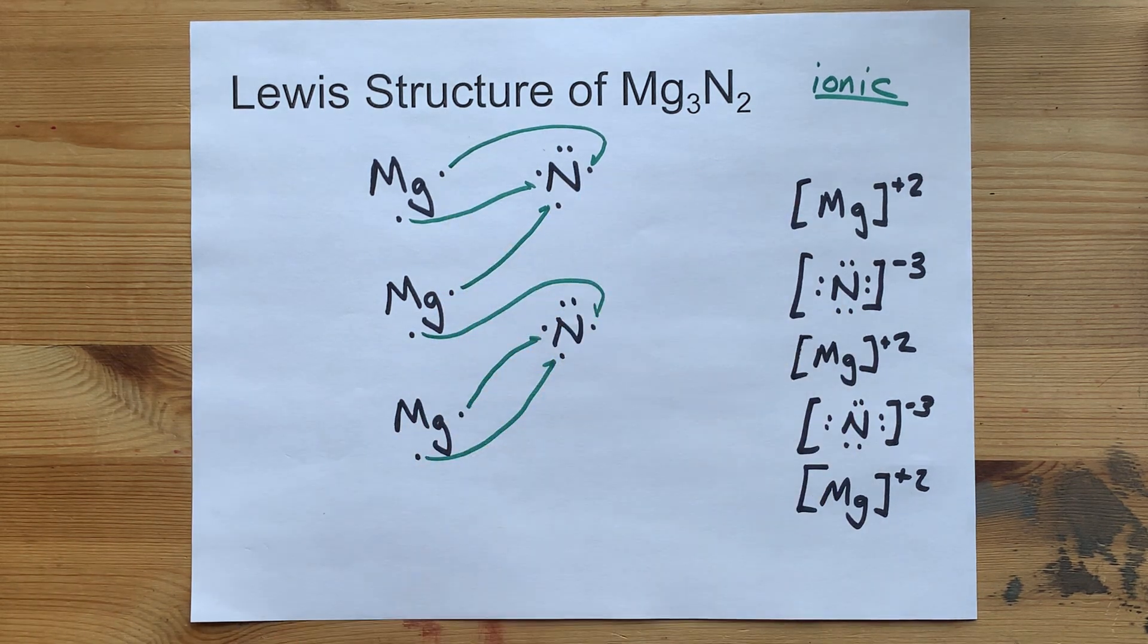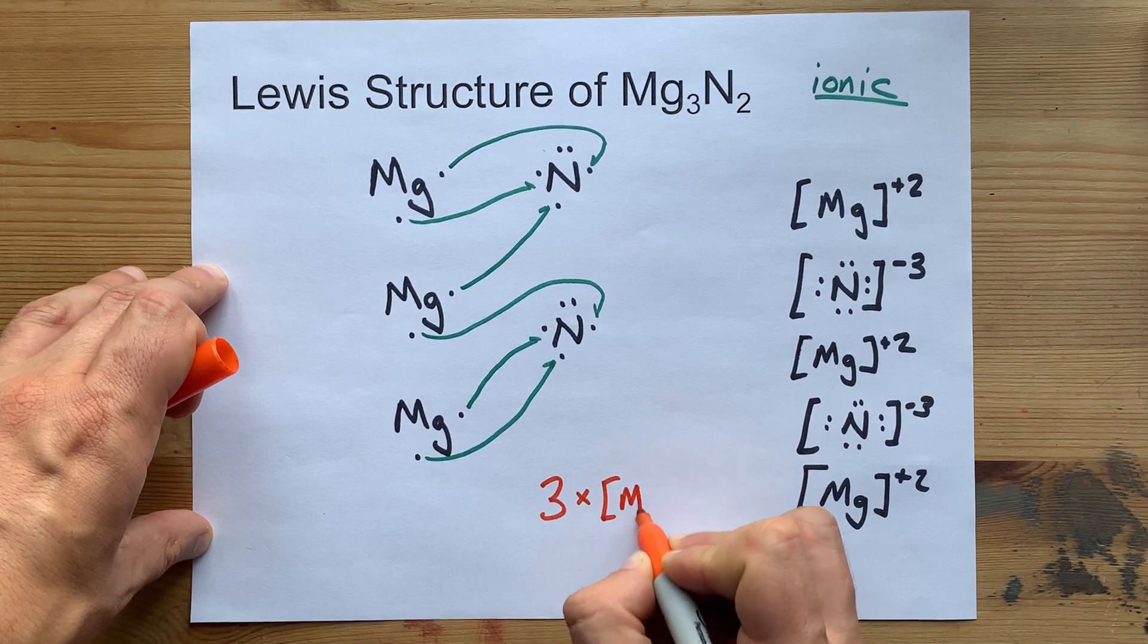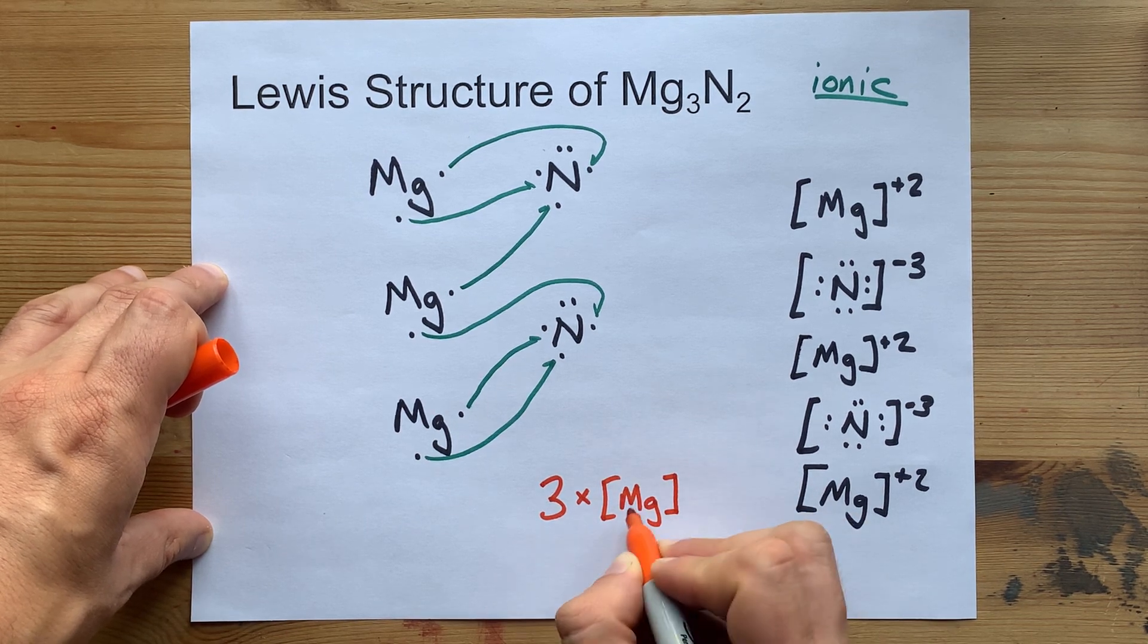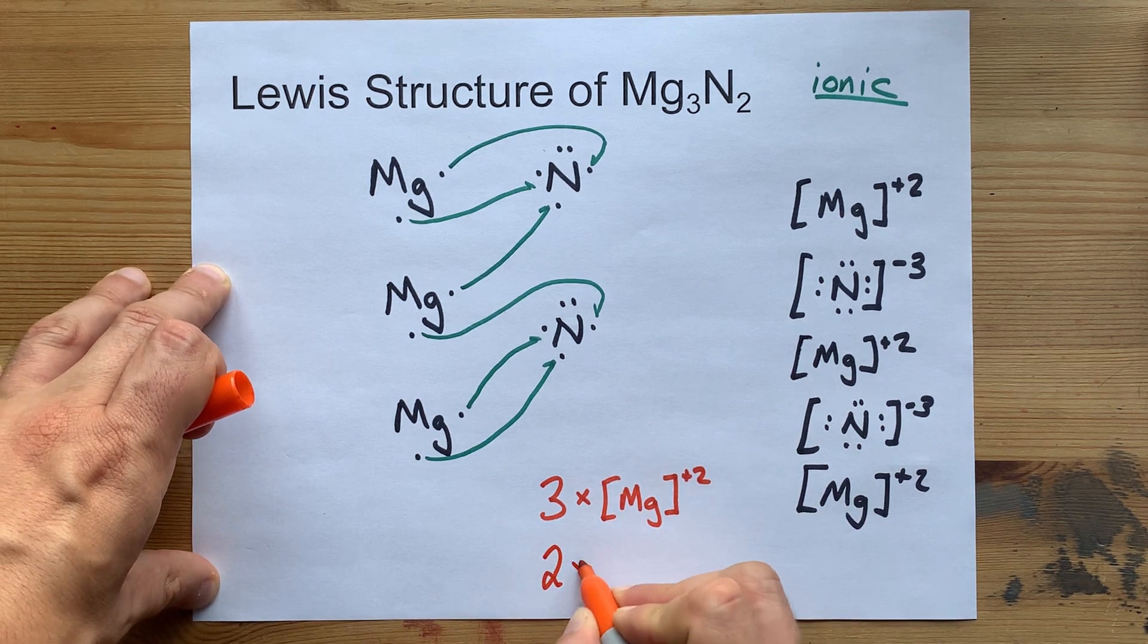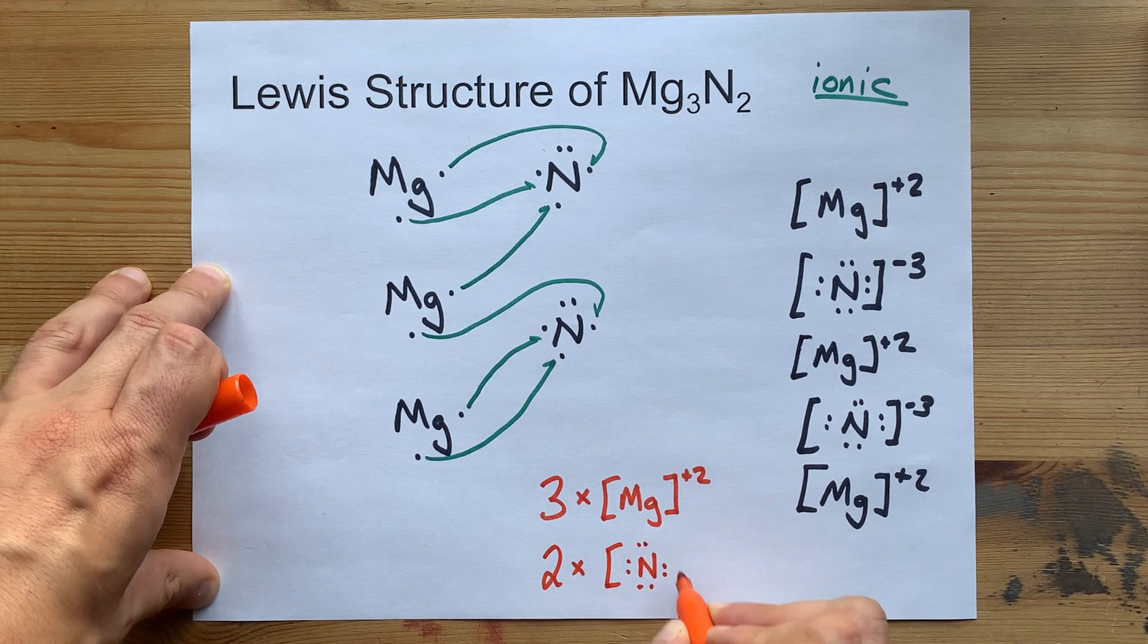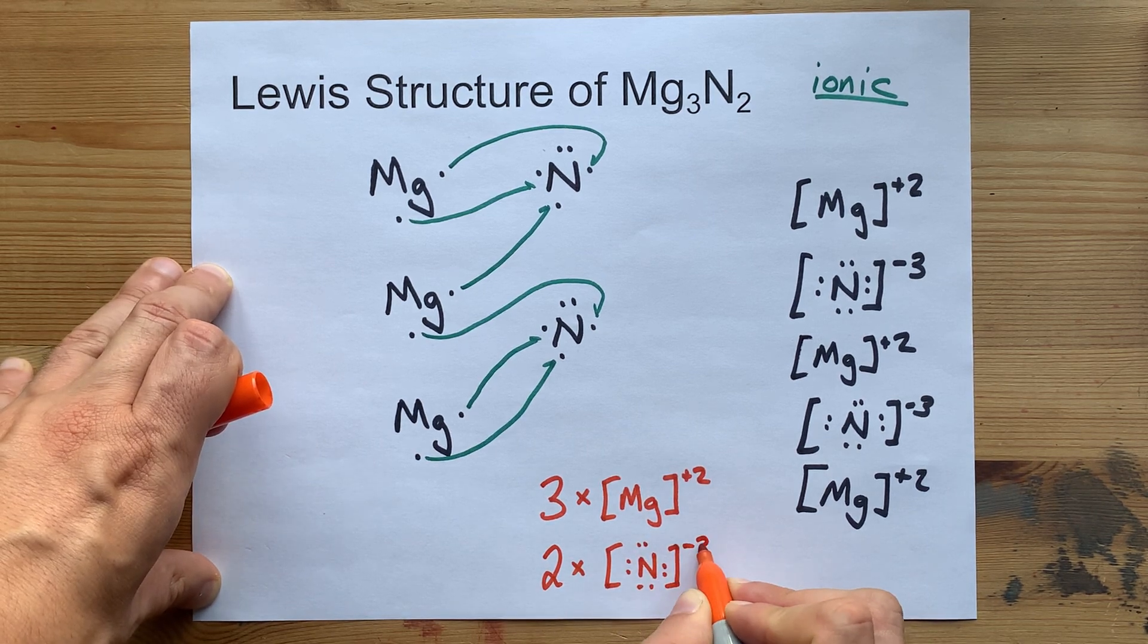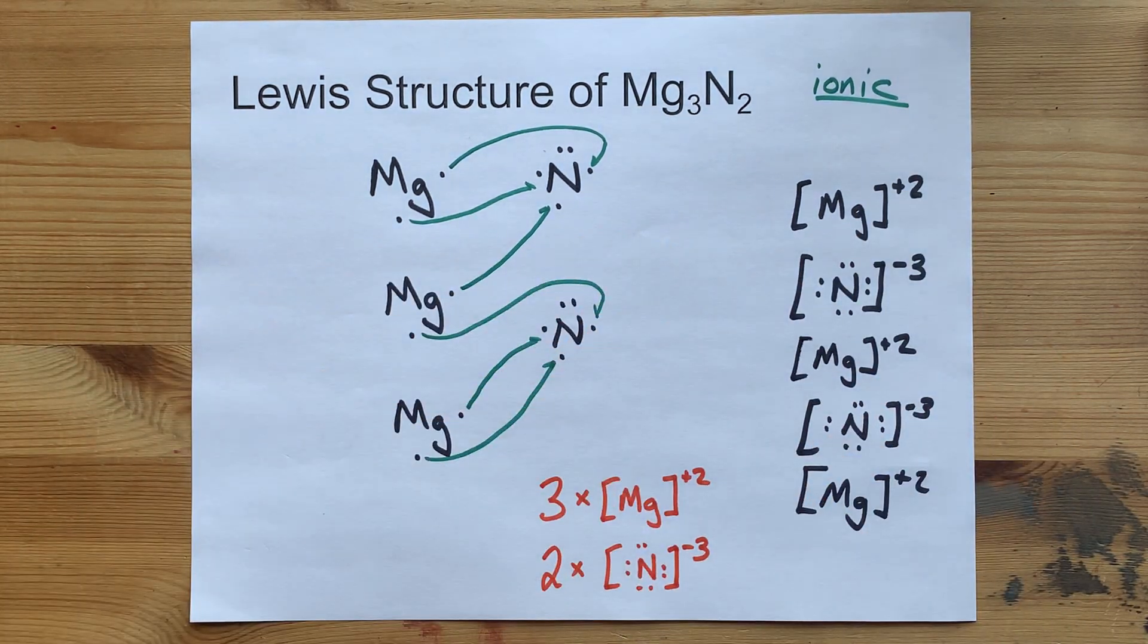Speaking of which, you might be allowed to use a shortcut. 3 MGs, you might be allowed to just write 3 times that Mg diagram to show that there are 3 of them, and 2 times the nitrogen diagram to show that there are 2 of those. Either one should be acceptable. This one's officially more complete.